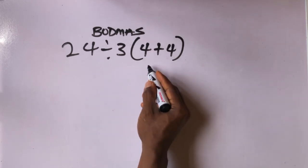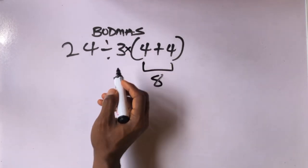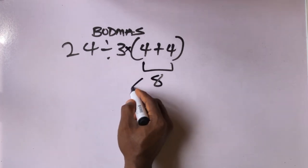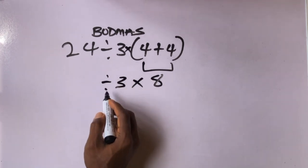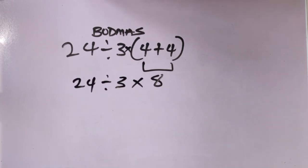4 plus 4 is what? Remember there's invisible multiplication here times 3, divided by what. So we have 24 divided by 3 times 8.